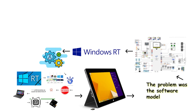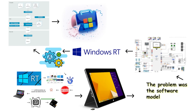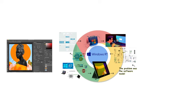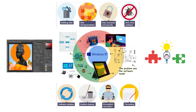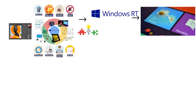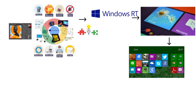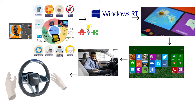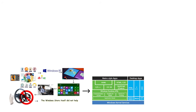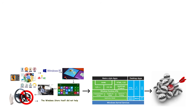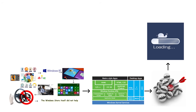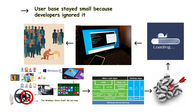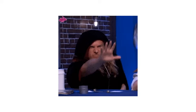Windows RT could only run applications compiled specifically for ARM architecture and distributed through the Windows Store. Traditional desktop software — everything from Chrome to Photoshop to simple utility programs — was incompatible. Even worse, Windows RT allowed a desktop mode but restricted it almost entirely to Microsoft's own apps. Users felt like they were being allowed to sit in the driver's seat of a car without permission to touch the steering wheel. The Windows Store itself lacked essential applications, had inconsistent quality, and grew too slowly to support an entire ecosystem. Developers ignored Windows RT because its user base was small, and the user base stayed small because developers ignored it. It was a perfect feedback loop of failure.